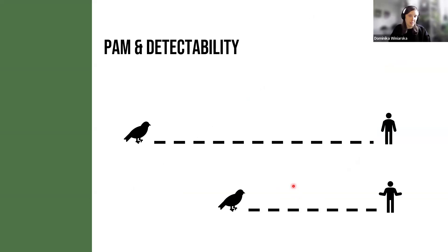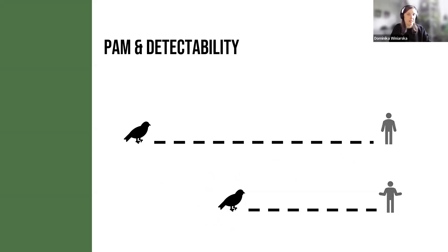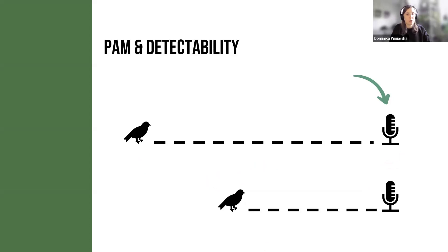We have to begin with detectability. Humans are not super good at estimating detection distances, or estimating the distances that birds are singing at. We can do it to some level — about 50 to 70 meters we are pretty good at estimating the distance — but distances further away are very difficult to precisely estimate. The same things happen with PAM: when we are recording soundscapes, we don't really know from how far we are getting all those birds that are singing.